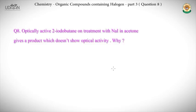Question 8: Optically active 2-iodobutane on treatment with NaI in acetone gives a product which doesn't show optical activity — explain why. A key piece of advice: whenever a question involves optical activity, always start with a Fischer projection, because it helps us understand the stereochemistry clearly.